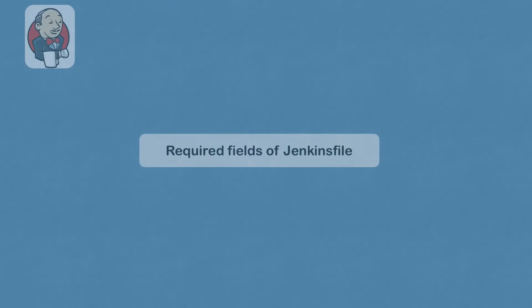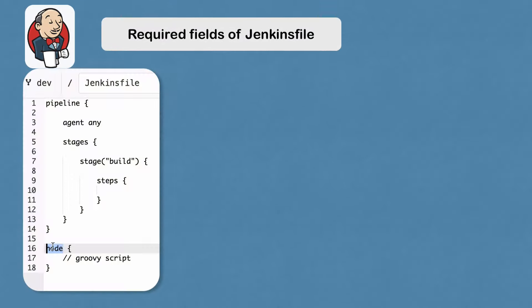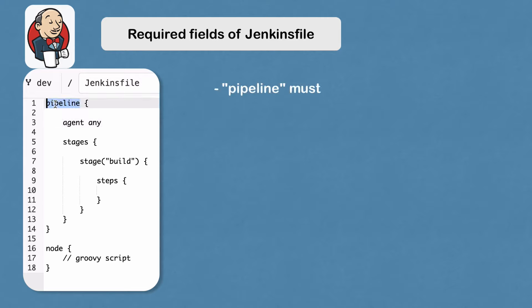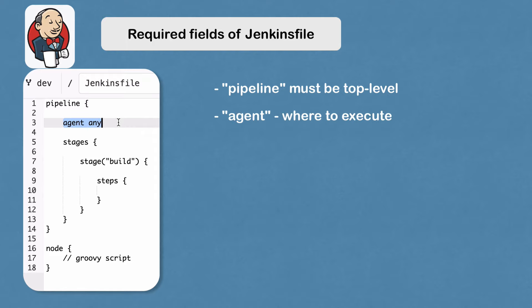In a declarative pipeline, the node definition is basically the same as these two lines. You declare that you are writing the pipeline, and 'agent any' basically means that this build is going to run on any available Jenkins agent. An agent can be a node, or an executor on that node. This is more relevant when you have a Jenkins cluster with master and slaves, where you have Windows nodes and Linux nodes, etc. But here for the base, we just say 'agent any.'